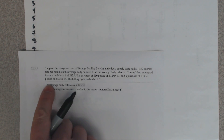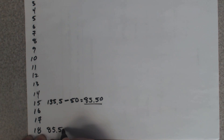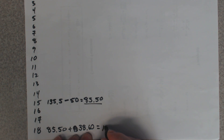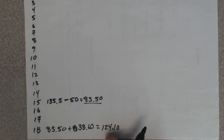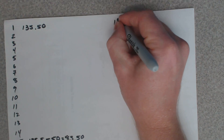On the 18th, a purchase of $38.60 posts. So on the 18th he makes another purchase — we add $38.60 to the balance of $85.50, giving a new balance of $124.10. He's going to carry that balance all the way to the 31st.